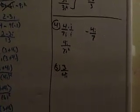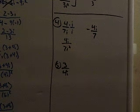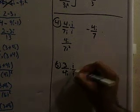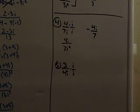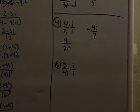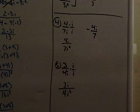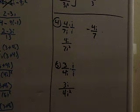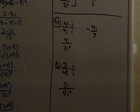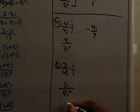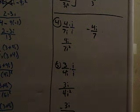Do the same thing to the bottom. We have 3 over 4i. So I'm multiplying the top and bottom by i. Well, that just gives me 3i over 4i squared. And then i squared is a negative one. So that's negative 3i over 4.